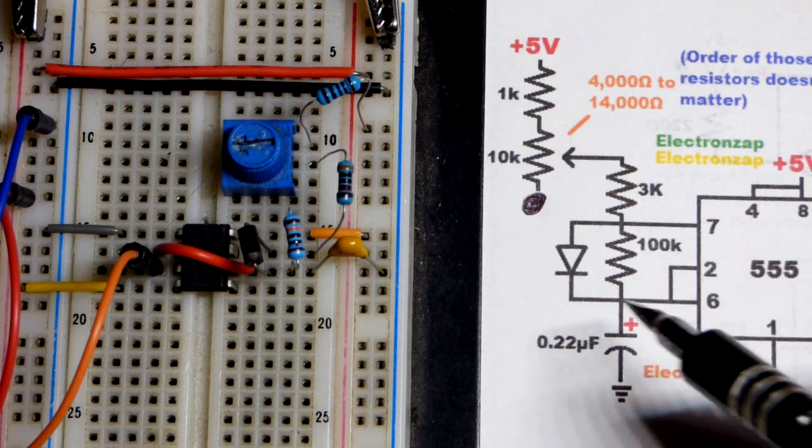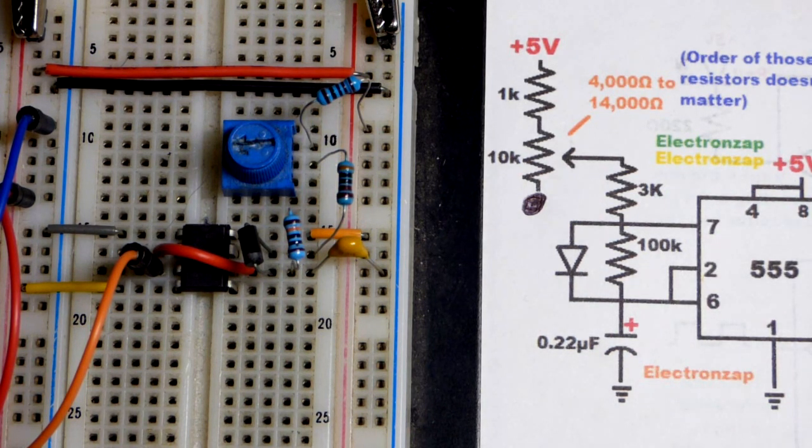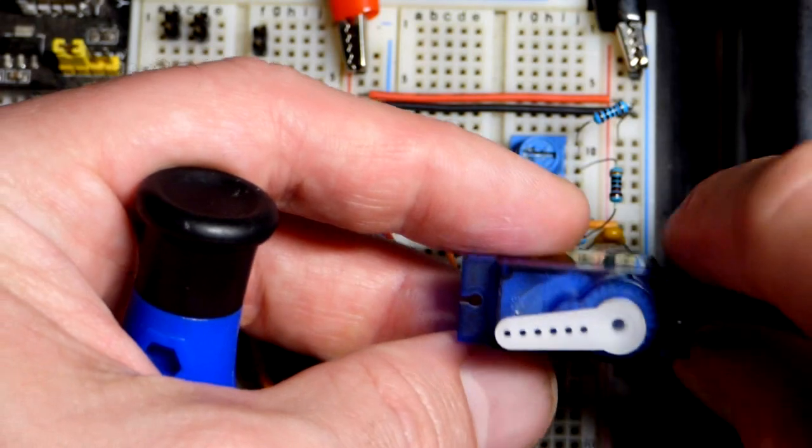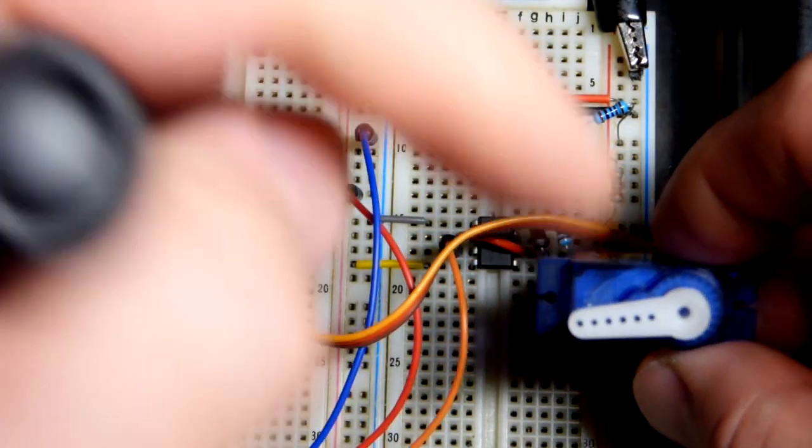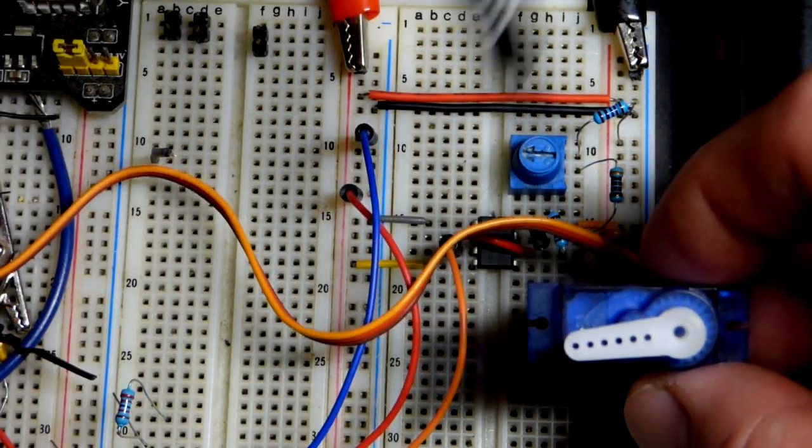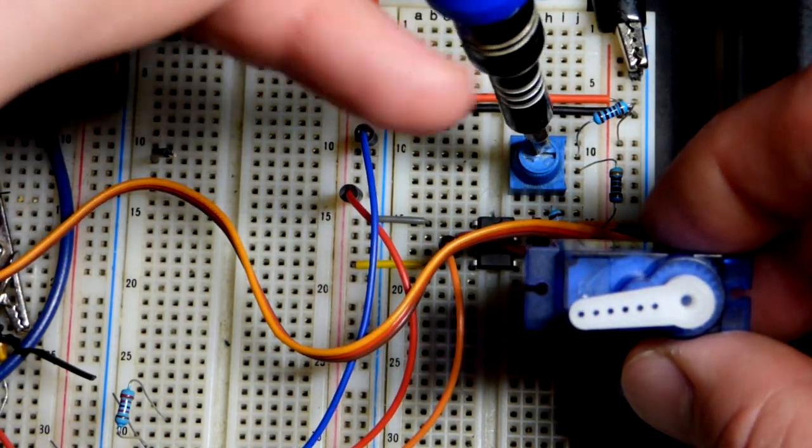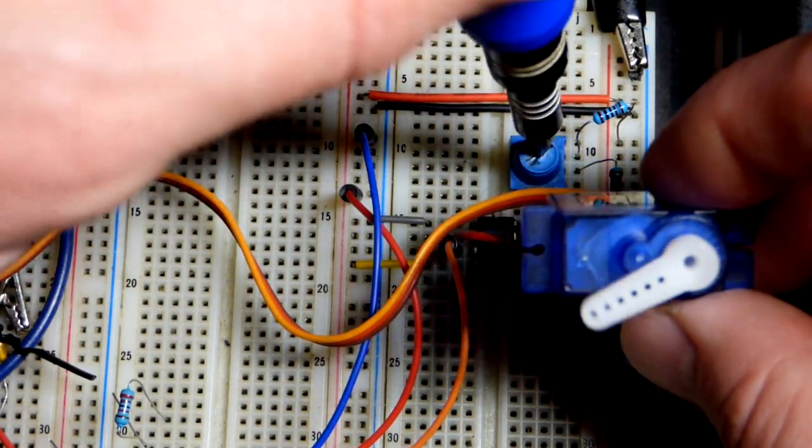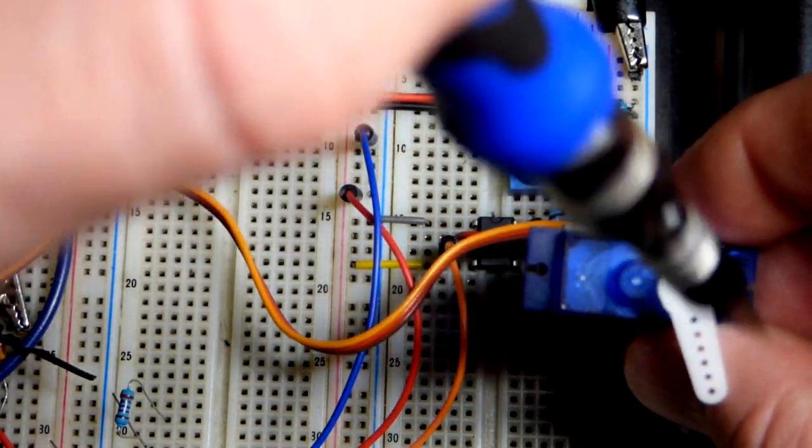That was in the approximate range you needed to adjust how long the output is high versus low to adjust the position of the servo. I think I have the trim pot about halfway but you can see that's kind of low right now, which is actually the opposite of what we had before.